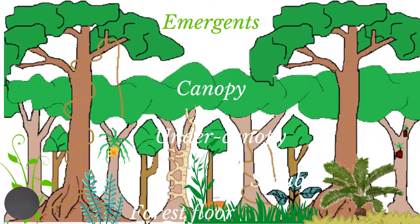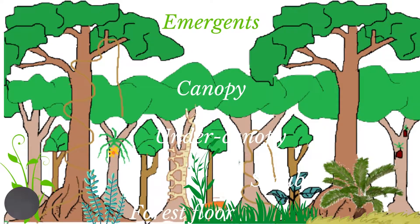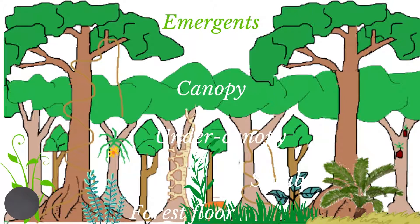The tropical rainforest has a unique structure. The plants are arranged in a number of layers, with each layer displaying distinct characteristics. The tallest layer is the emergent layer. Below that is the canopy layer, then the under canopy — also called the understory layer — and the shrub layer, which are often combined into one layer. Below the shrub layer we have the forest floor.